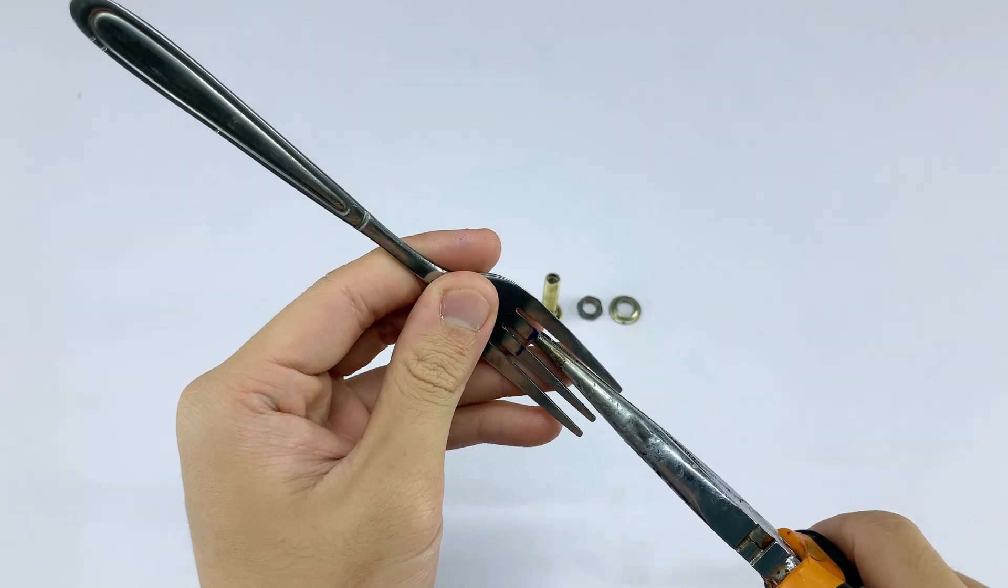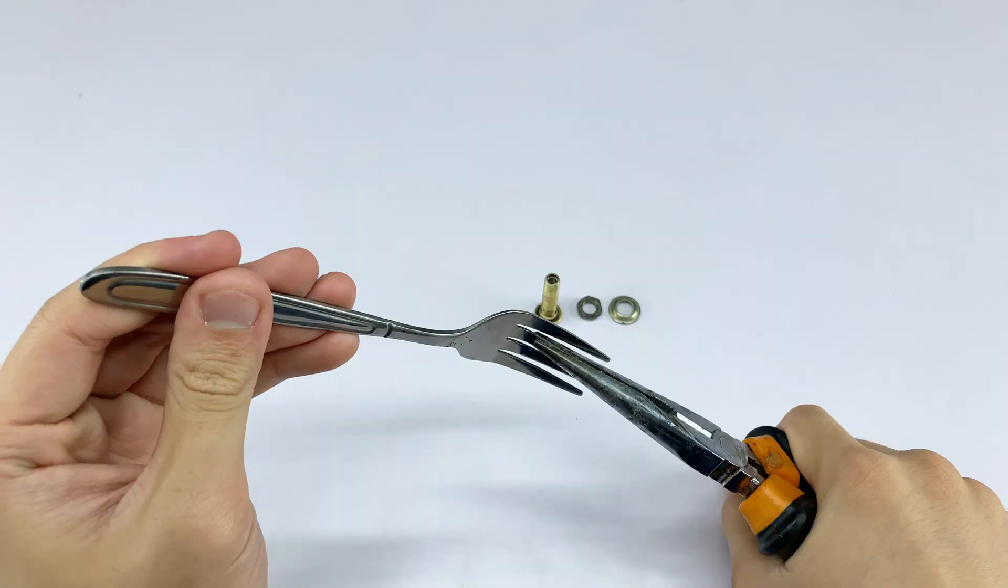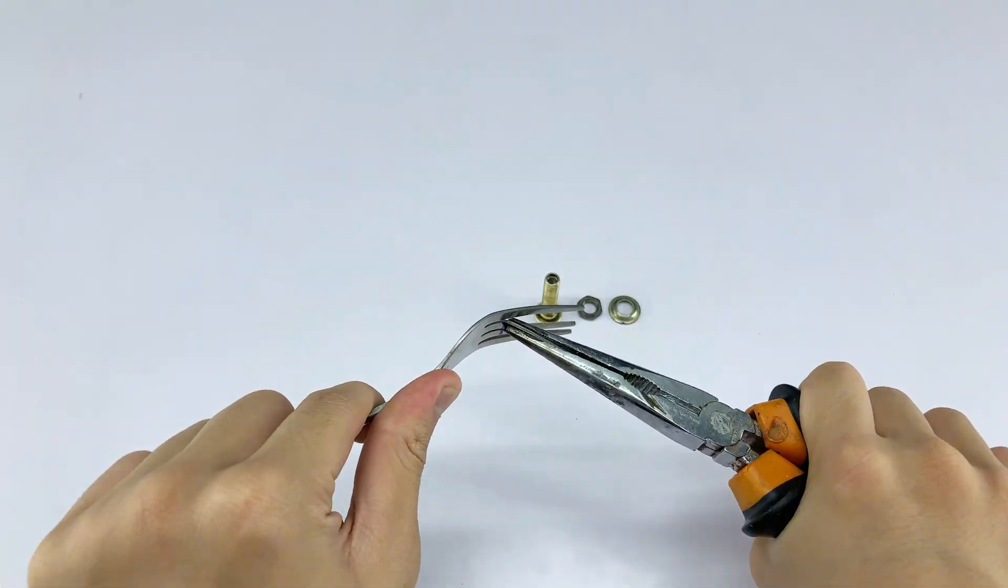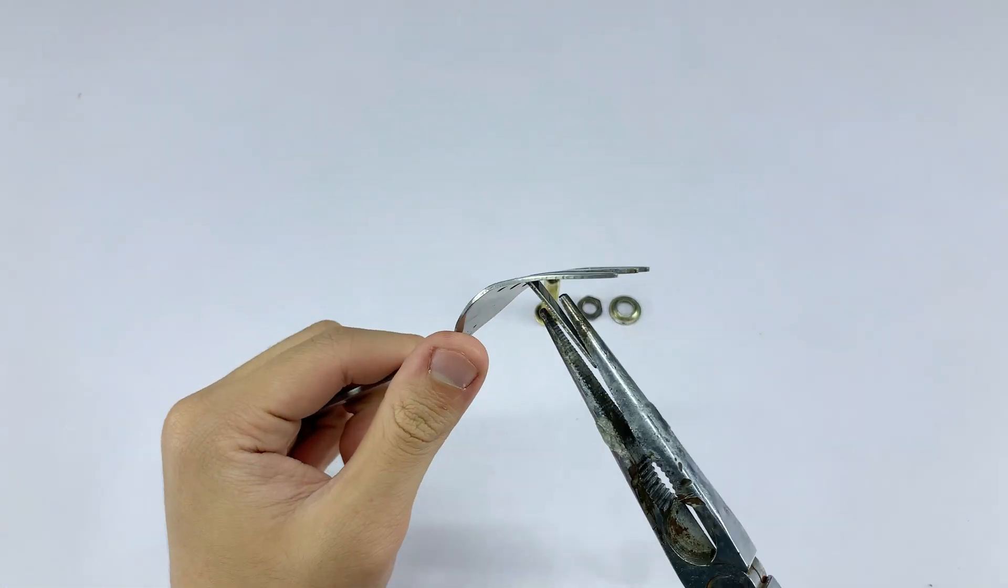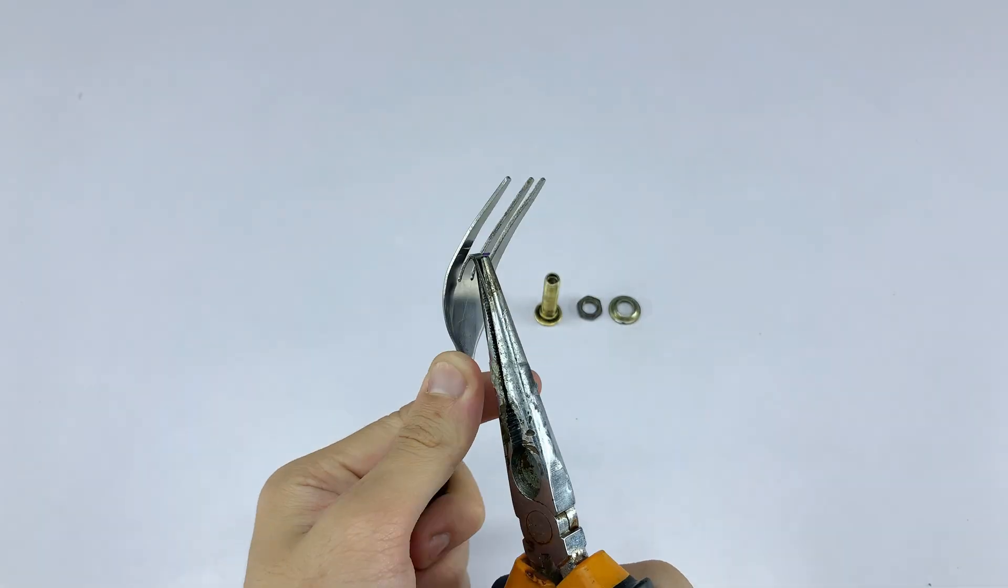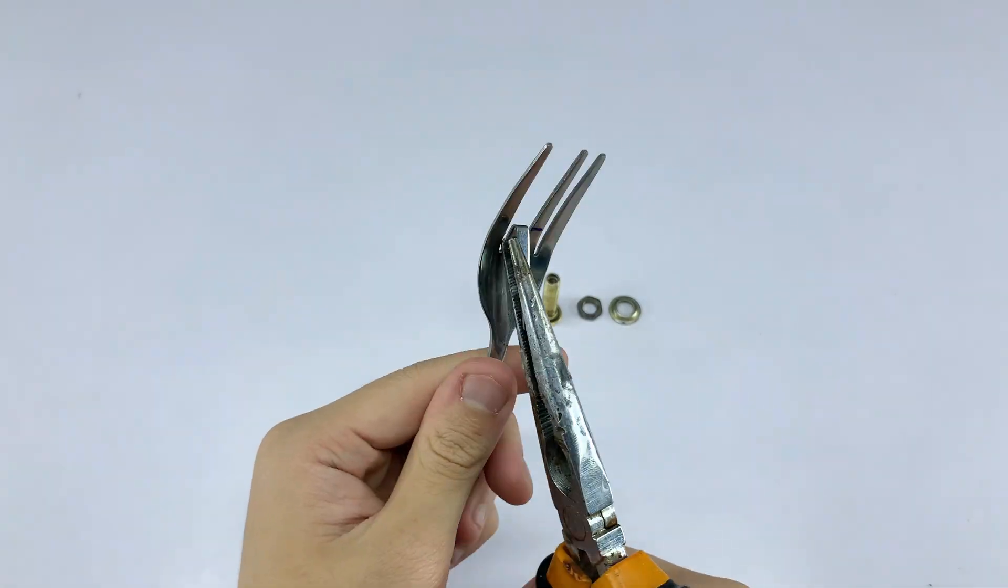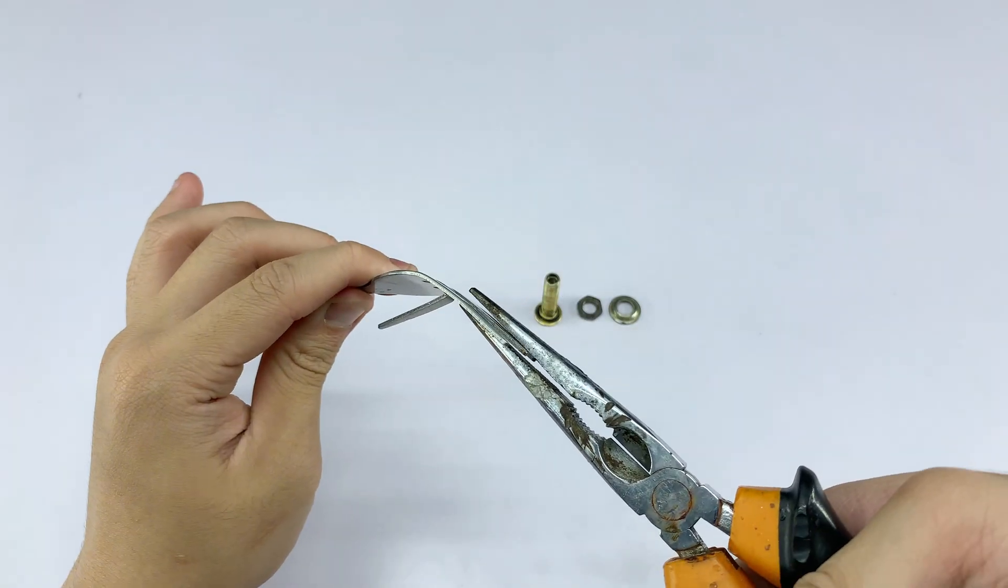Using a pair of pliers, I'm carefully bending the two tines of the fork inwards. I will break the two inner prongs, creating a wider gap. This modification is essential to accommodate the metal valve stem component we'll be adding and to ensure proper alignment.